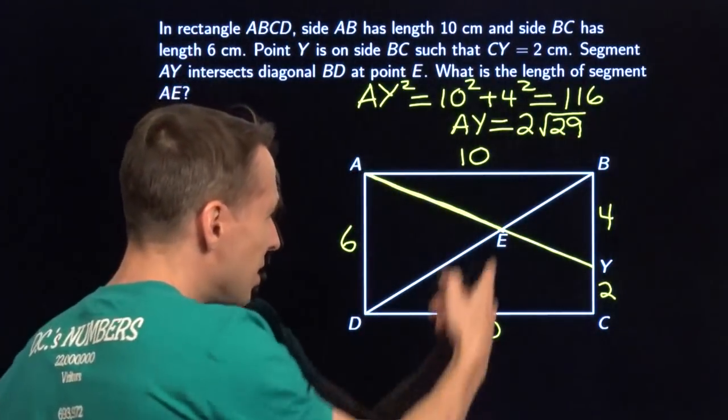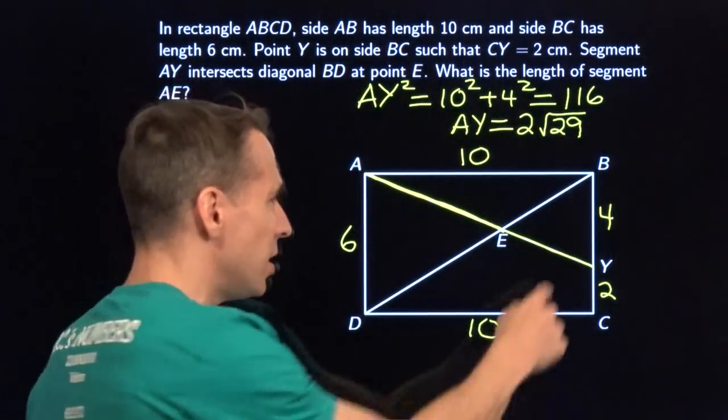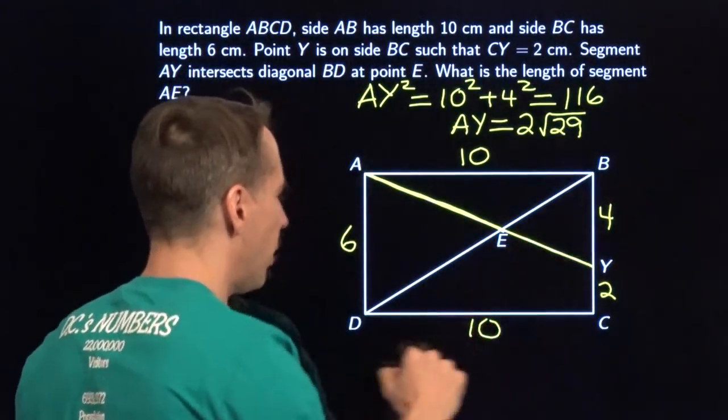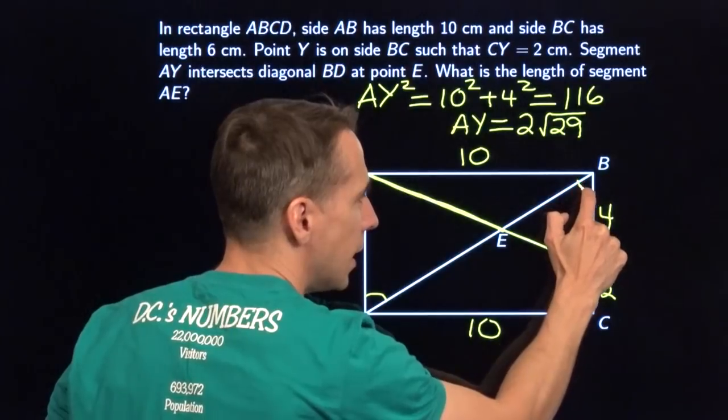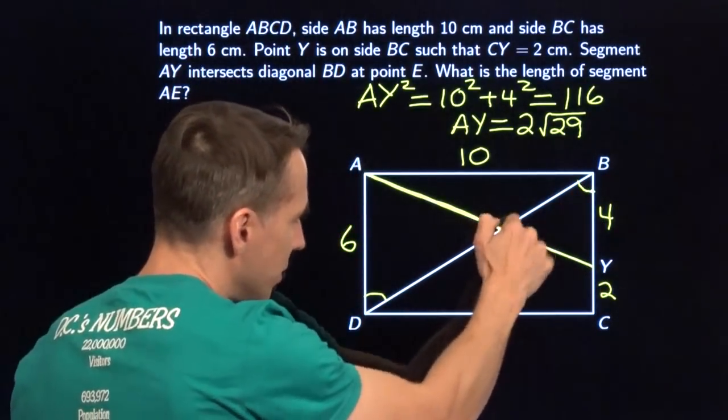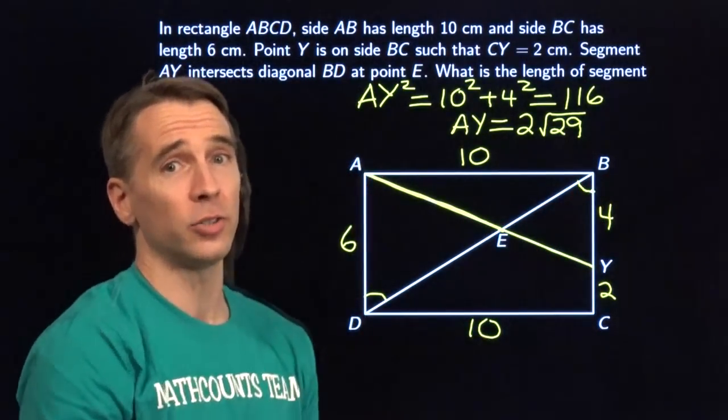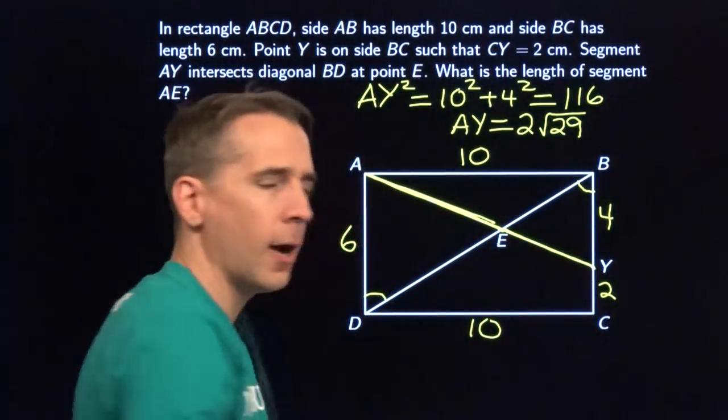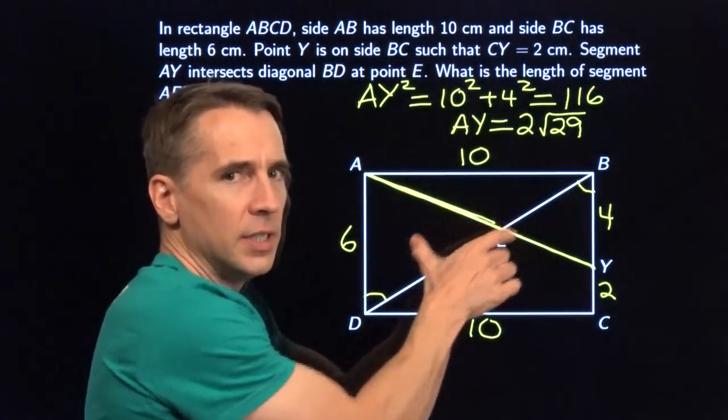ADE, it's similar to the triangle that's over there, YBE. They are similar. This is parallel to this. So this angle right here equals this angle right here. Of course, these two angles at E are equal. These triangles are similar. And this AE and EY, they are corresponding sides of these similar triangles.